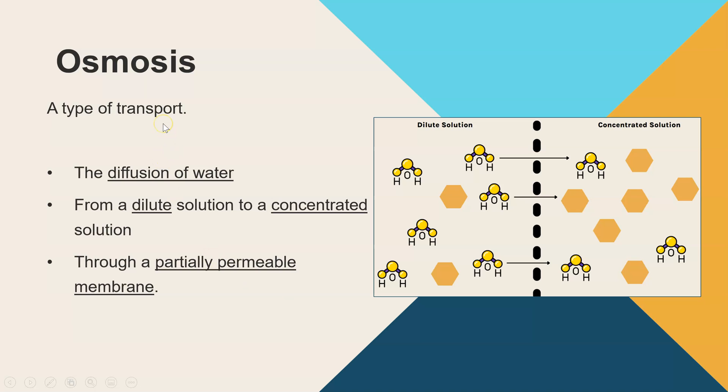So let's start by looking at the definition. Osmosis is a type of transport, but it is only the movement of water. And specifically in the exam you'd need to say it's the diffusion of water. Now if you're not sure what diffusion is, I'll link my video up here that I've already covered on diffusion.